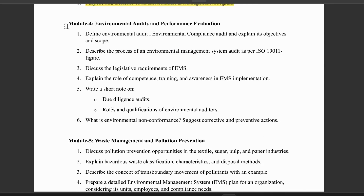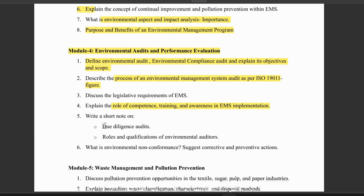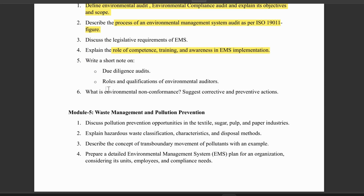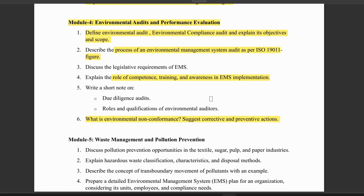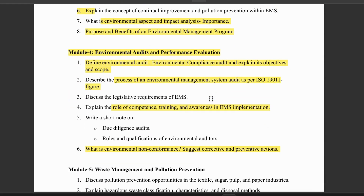Module 4 is all about environmental audits and performance evaluation. What is environmental audit? Environmental compliance audit — explain objectives and scope. The process of environment management system as per ISO 19011, with a figure. Next, legislative requirements of EMS, and the role of competence, training, and awareness in EMS implementation. What is due vigilance audit and the role and qualifications of environmental auditors? What is environmental non-conformance — suggest corrective and preventive actions. Module 4 is easy, with straightforward and simple topics. The order of easiest modules is: first, second, then fourth.